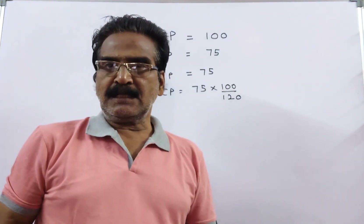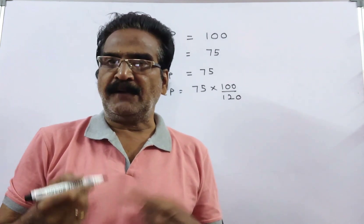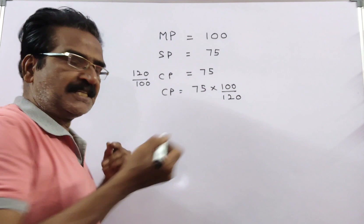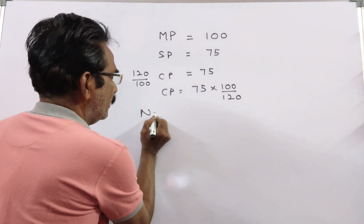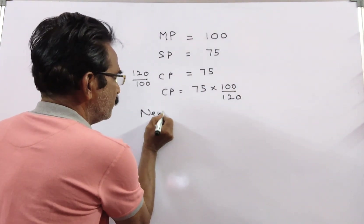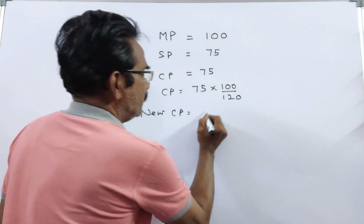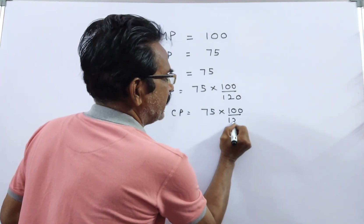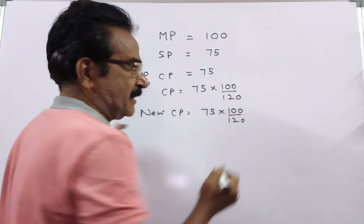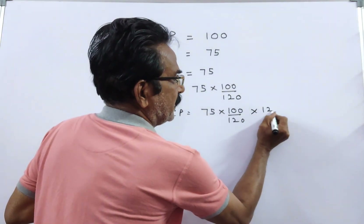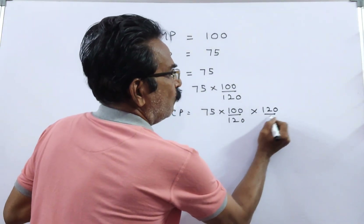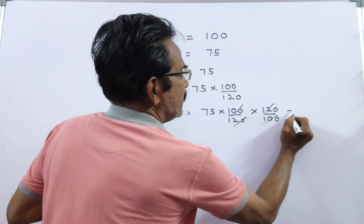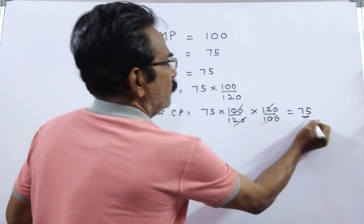Now, the cost price is increased by 20%. If the cost price is increased by 20%, what is the new cost price? This is the old cost price. The cost price is increased by 20%, so the new cost price becomes 120/100 of the old cost price. So the new cost price is equal to 75 rupees.